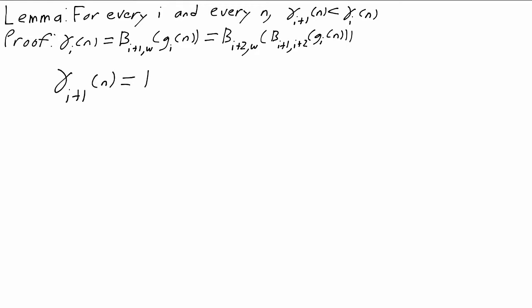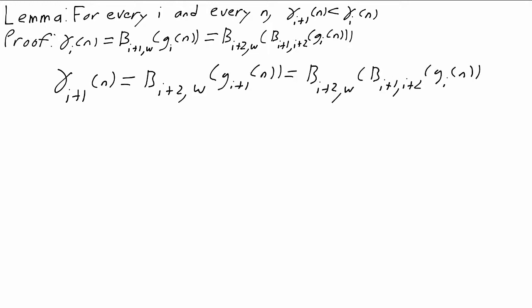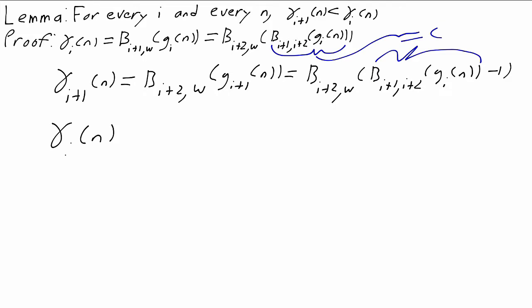Gamma_{i+1}(n) is defined to be b_{i+2, omega}(g_{i+1}(g_i(n) - 1)). To make this clearer, take the common part b_{i+1, i+2}(g_i(n)) and call it c. Then gamma_i(n) is b_{i+2, omega}(c), while gamma_{i+1}(n) is b_{i+2, omega}(c - 1).